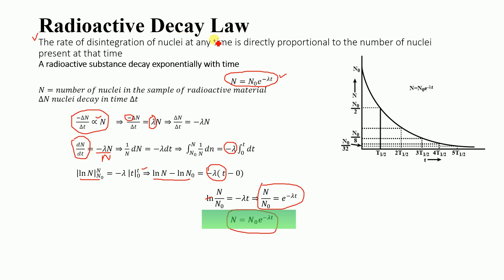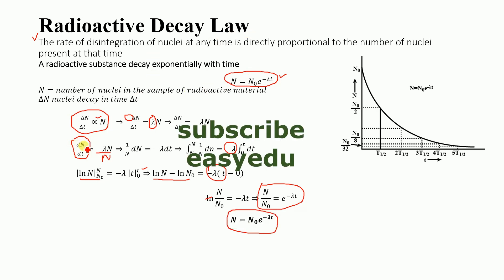This law tells us that a radioactive substance decays exponentially with time. This law is a statistical one — it does not tell us when a particular nucleus will decay, but only tells us that after a certain time, a certain fraction will decay. The term dN/dt is the rate of decay. Thank you for watching, and do not forget to subscribe to GDU for more videos.